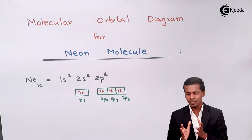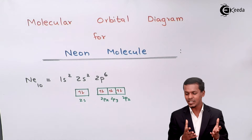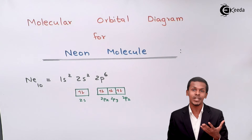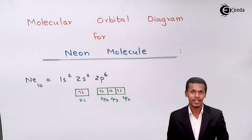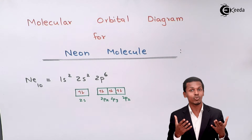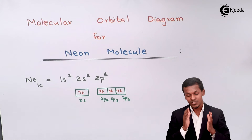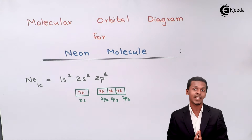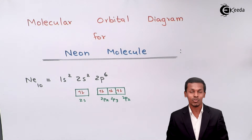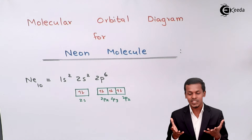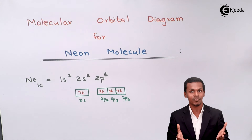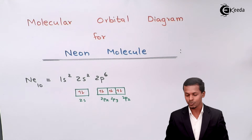Since we have to represent the molecular orbital diagram, it doesn't give information only about the bond — it also gives detail about the energy levels when two atoms combine. That is the main reason we have to understand how to represent the molecular orbital diagram for any kind of molecule. Neon is the example we are taking.